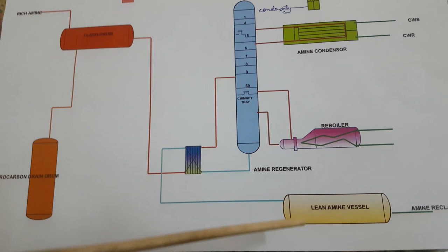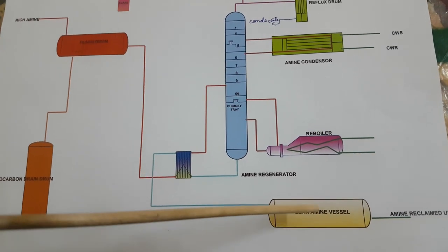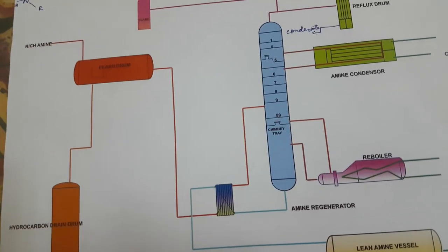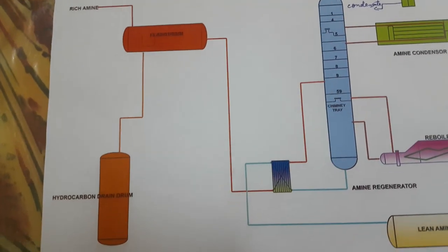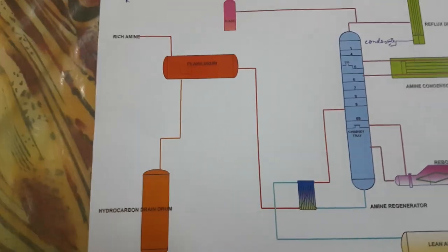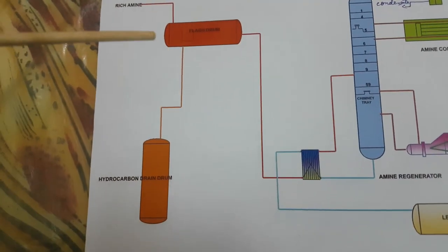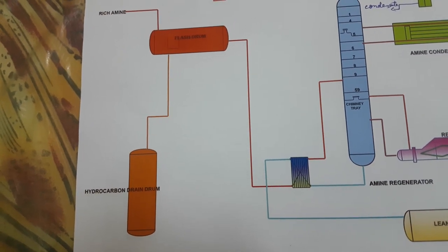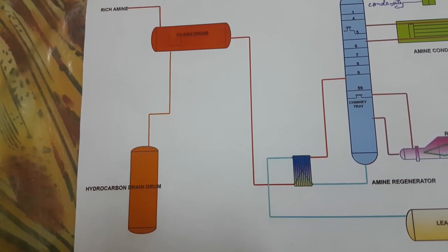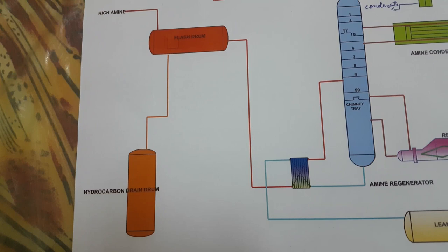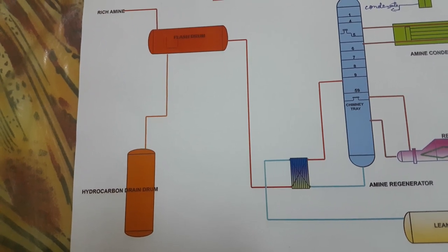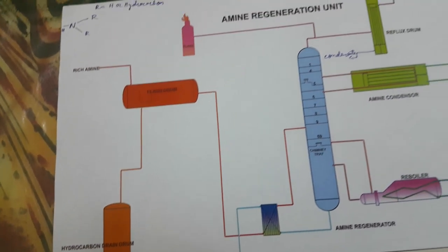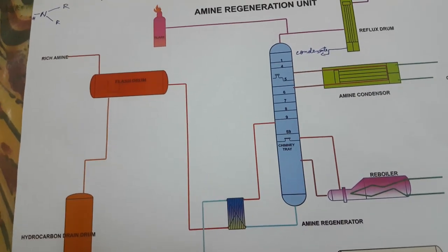In the lean amine vessel, the lean amine is stored. Lean amine is amine which does not contain sour gas or hydrogen sulfide gas. Now let's go for the types of amine.